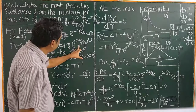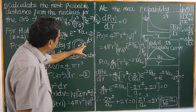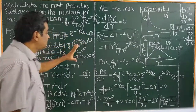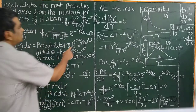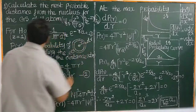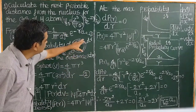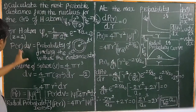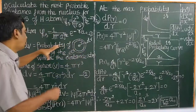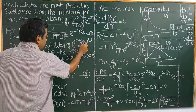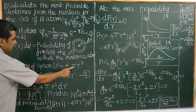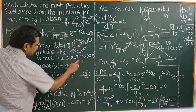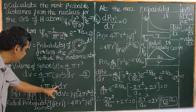Now, let us say this is the nucleus, and r is the radius of the electron from the nucleus. The probability of finding the electron within a small distance dr — since the s orbital is spherically symmetric, the volume element is not just dr but 4πr²dr. The volume of a sphere is (4/3)πr³. Differentiating: dV = 4πr²dr. Therefore, the probability of finding the electron within this volume element involves 4πr²dr.